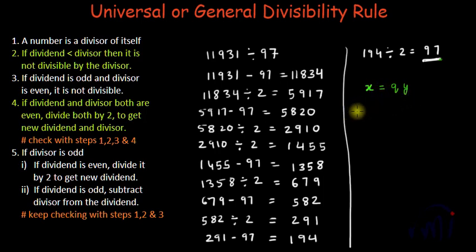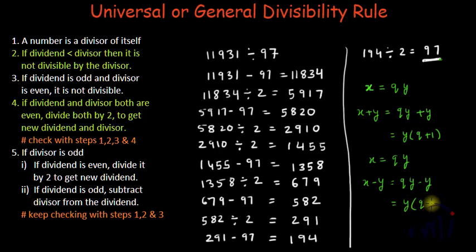If I add y to both sides, x plus y equals qy plus y, or y multiplied by q plus 1. Similarly, if x is a multiple of y and I subtract y from both sides, taking y common gives y multiplied by q minus 1, meaning x minus y is divisible by y, q minus 1 times.